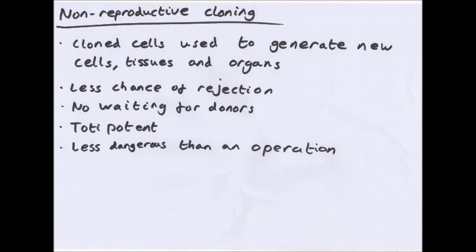Stem cells are totipotent — you can get any sort of organ or tissue from them. It's also less dangerous than a traditional operation. For example, using cloned cells to replace damaged heart tissue is much safer than a full heart transplant. You can regenerate heart muscle following a heart attack, repair nervous tissue, or repair the spinal cord of paralysed people.